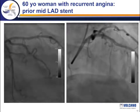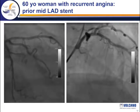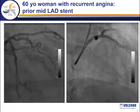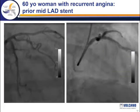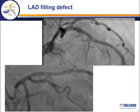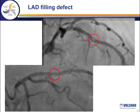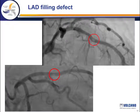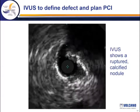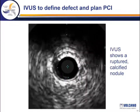Here's a 60-year-old woman with recurrent angina. She's had a previous stent in the mid left anterior descending, and this filling defect is just proximal to that previously placed stent. The lesion has the appearance of thrombus with new onset unstable angina, but in my experience these lesions are often not thrombus but in fact calcium. Intravascular ultrasound shows a ruptured calcified nodule in that portion of the vessel.